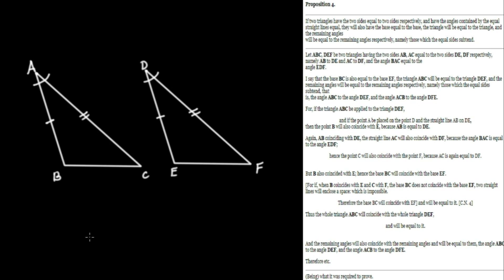Now how does Euclid intend to prove this? He says, for if the triangle ABC be applied to the triangle DEF, so think of this as a sort of superposition, that we're going to take this and relocate it onto this triangle. And he says, if the point A be placed on the point D, so we're going to place A upon the point D, and the straight line AB upon D,